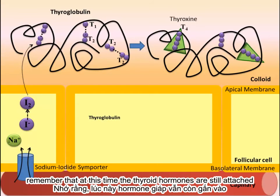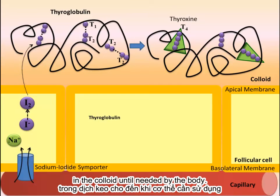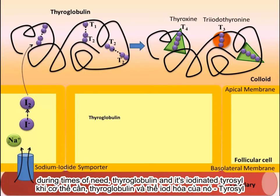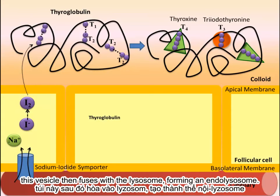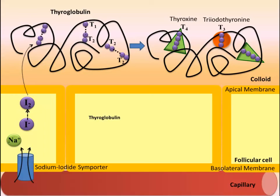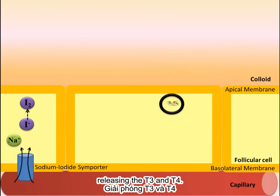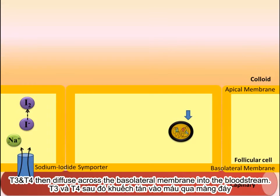At this point, the thyroid molecules are still attached to the thyroglobulin backbone. These mature thyroid hormones can be stored in the colloid until needed by the body. In order to release the thyroid hormones into the bloodstream during times of need, thyroglobulin and its iodinated tyrosines undergo endocytosis and enter the follicular cell. This vesicle then fuses with a lysosome, forming an endolysosome. Digestive enzymes inside the lysosome break down the thyroglobulin backbone, releasing T3 and T4.